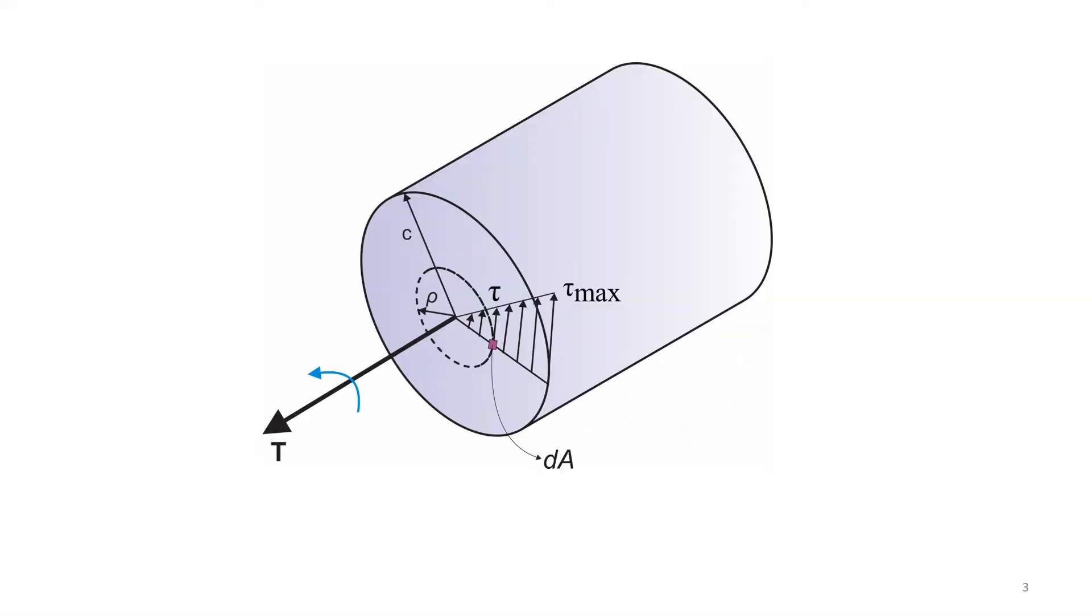When a straight prismatic bar is subjected to moment about its longitudinal axis, it twists about that axis, shearing stresses are developed, and a single stress resultant, the twisting moment T, is developed on each transverse cross-section.